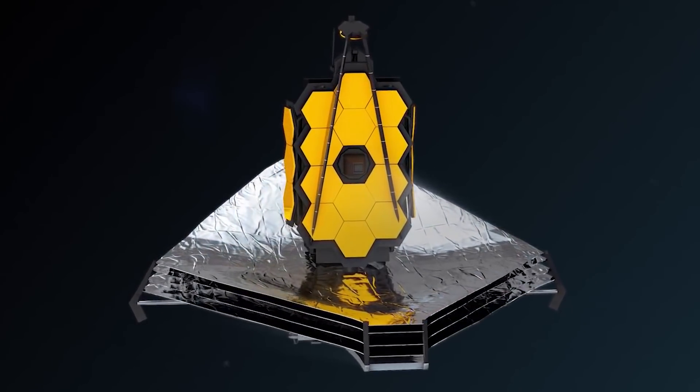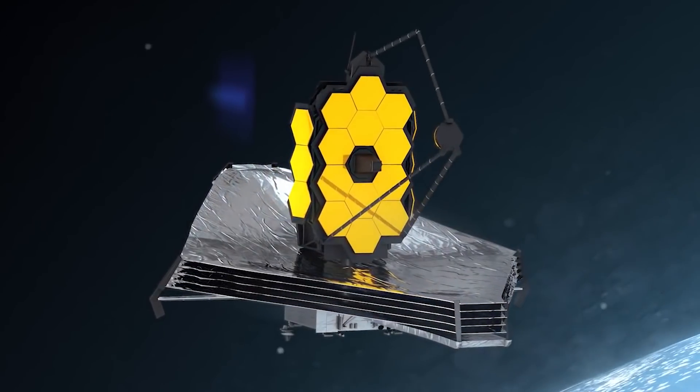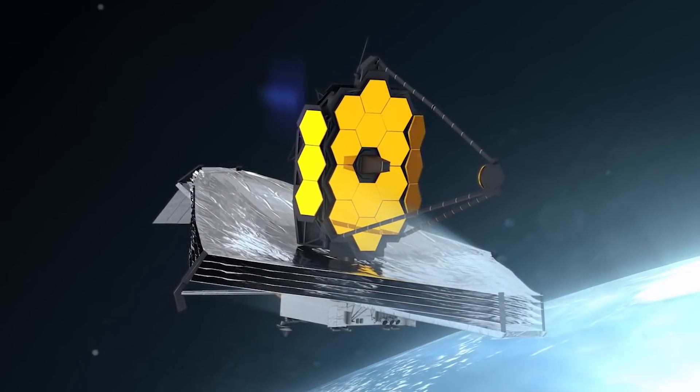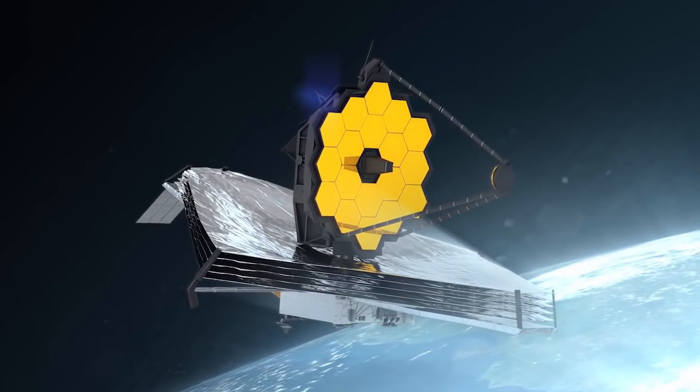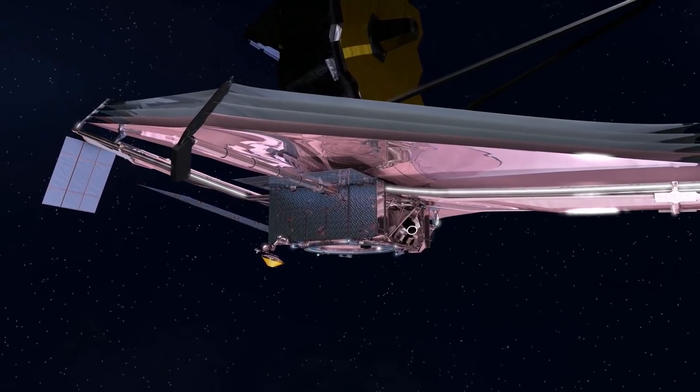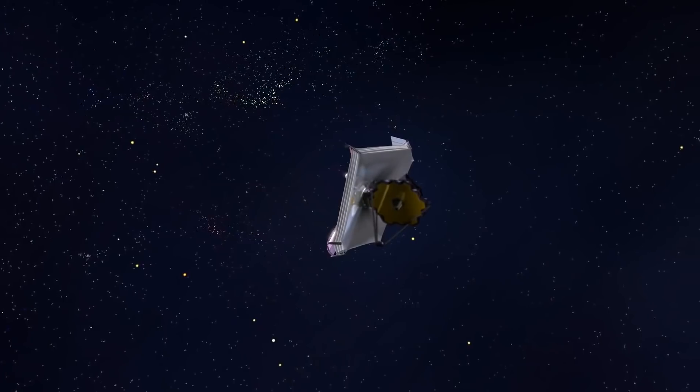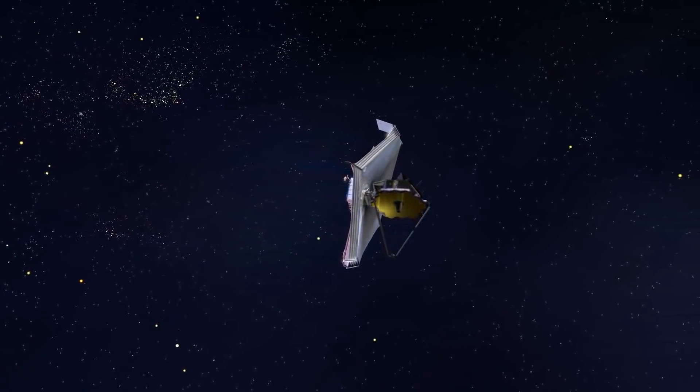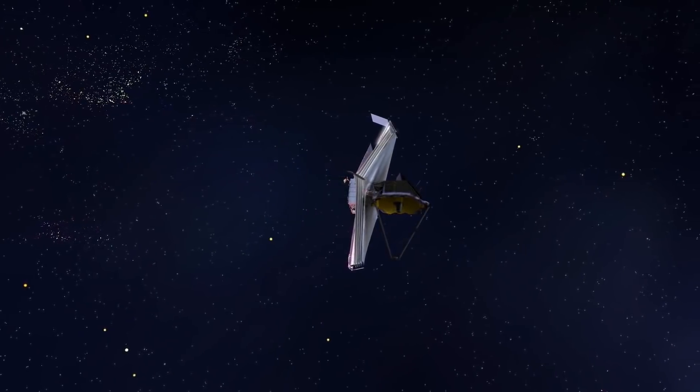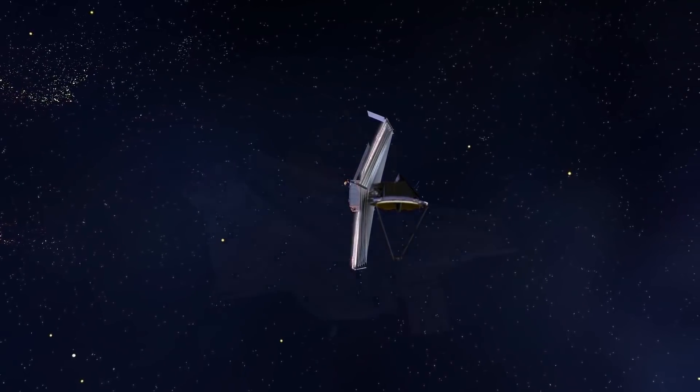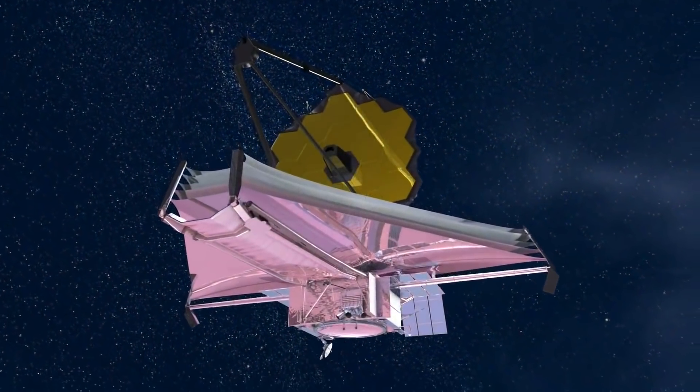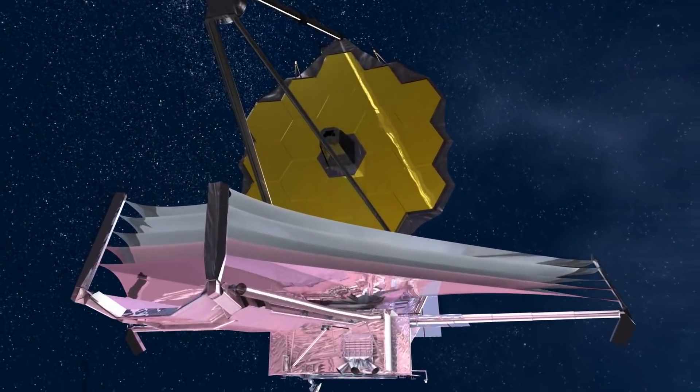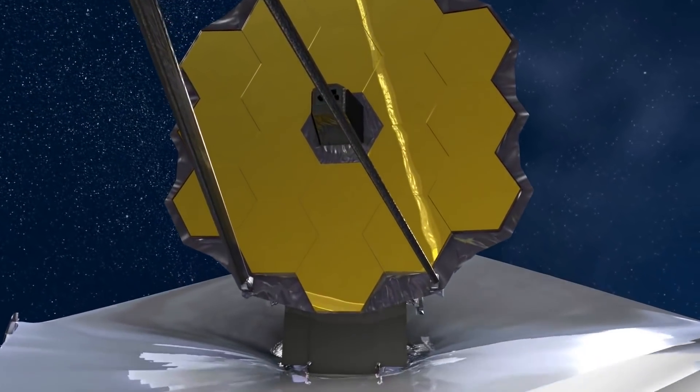Telescope deployment is complete. Ongoing cool-down and instrument turn-on continue. The telescope and scientific instruments started to cool rapidly in the shade of the sunshield once it was deployed, but it will take several weeks for them to cool all the way down and reach stable temperatures. This cool-down will be carefully controlled with strategically placed electric heater strips. The remaining five months of commissioning will be all about aligning the optics and calibrating the scientific instruments.